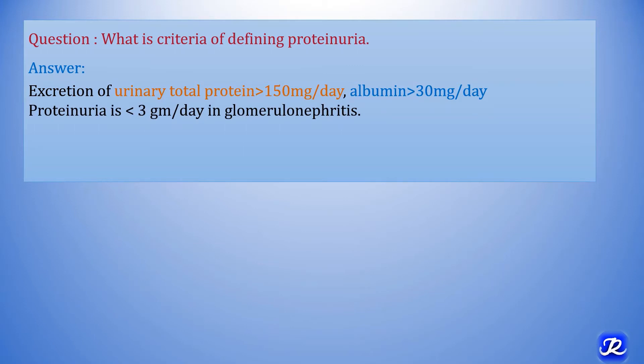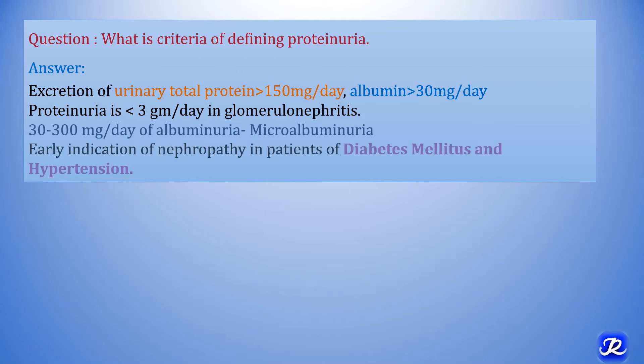In glomerulonephritis, proteinuria is always less than 3 g per day, but in nephrotic syndrome it is more than 3 g per day. 30 mg per day of albuminuria is called microalbuminuria, and this microalbuminuria is the early indication of nephropathy in patients of diabetes mellitus and hypertension.